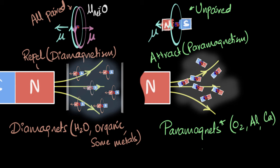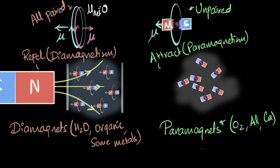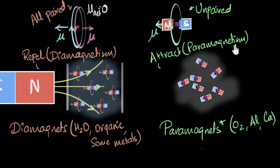What would happen if you get rid of the magnet? Would oxygen stay magnetized? There's no reason for the atoms to stay aligned, because they're jiggling and vibrating randomly. They will go back to their random orientations and lose magnetism. So paramagnetism is also a very weak and temporary phenomenon.